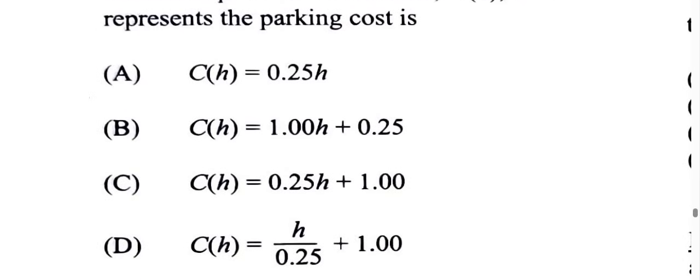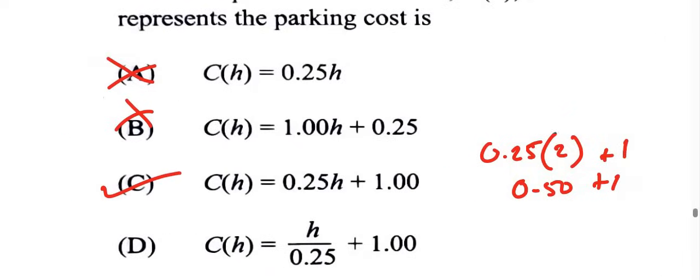Obviously this one doesn't have a dollar separated from the 25 cents for every hour, and the only answer that makes sense is option C. For example, if you stayed two hours, it's 25 cents per hour, so for two hours it'd be 50 cents. So it'd be 0.25 times 2, which is 50 cents plus the dollar, so you pay $1.50 for instance.